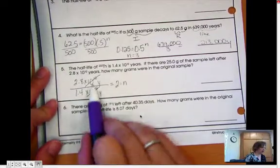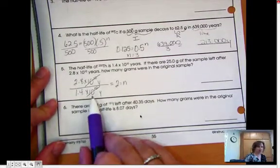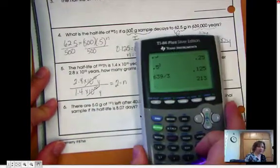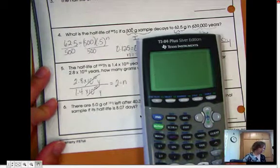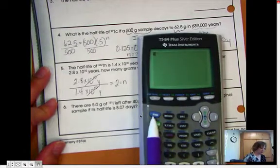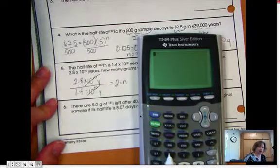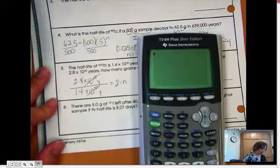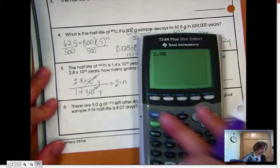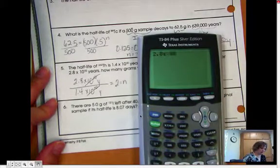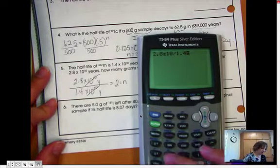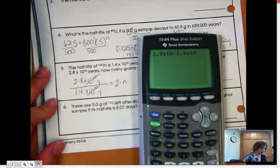Now, if you didn't have numbers that were easy to cancel out that way, don't forget, you can put it in your calculator. And you would use that second function and the little comma button up there above the 7 to get that little EE, right? Remember when we did Avogadro's number? So you do 2.8 second EE 10 and divide by 1.4 second comma 10. And you still get 2.